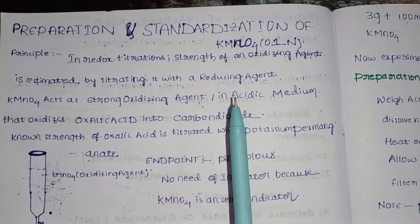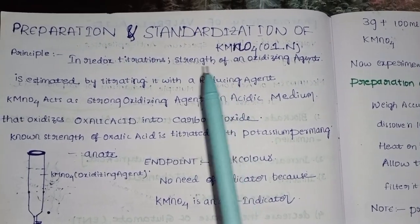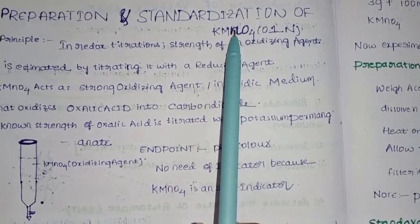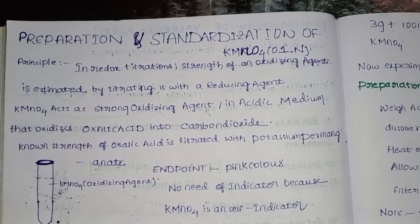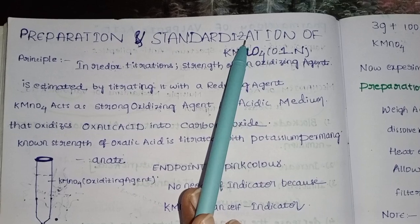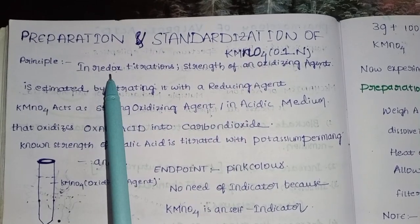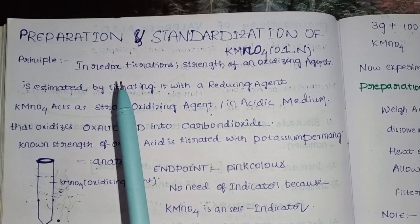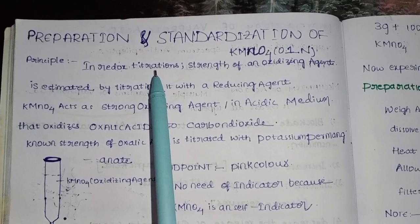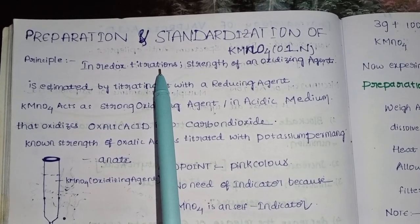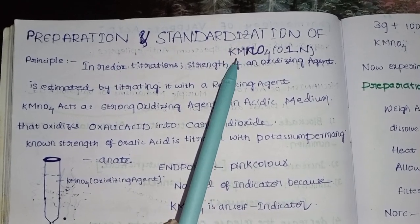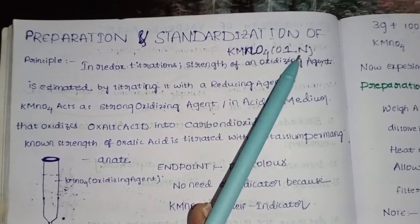First of all, this is the analysis of KMnO4 and the topic is preparation and standardization of KMnO4 at 0.1 normal. We are going to use redox titration, involving reducing agents and oxidizing agents. Now we are going to prepare potassium permanganate 0.1 normal.